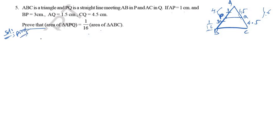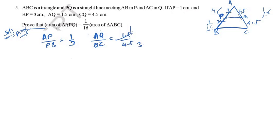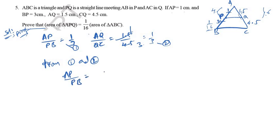From the given values: AP/PB = 1/3, and AQ/QC = 1.5/4.5 = 1/3. So AP/PB = AQ/QC = 1/3. Since these ratios are equal, by the converse of the Basic Proportionality Theorem, PQ is parallel to BC.